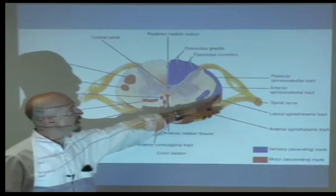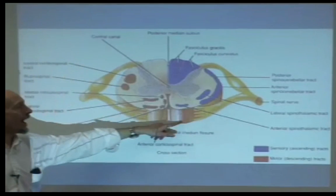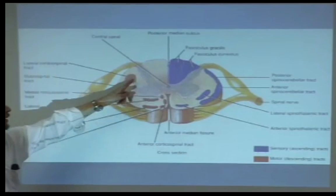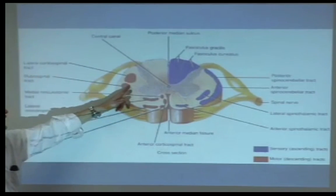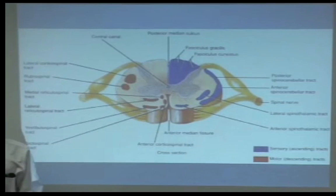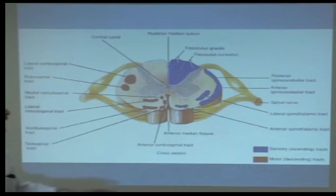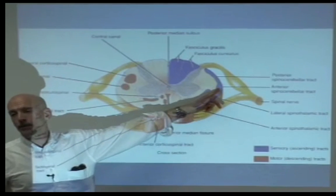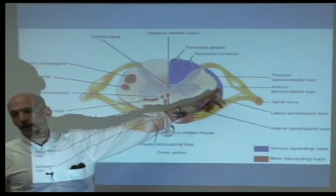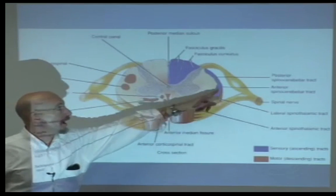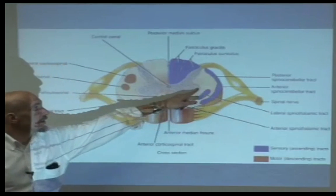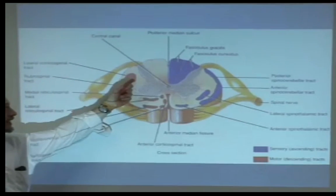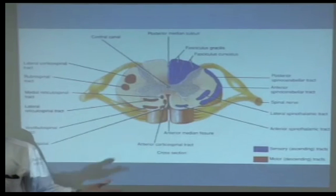So: spinal cerebellar tracts are on the back, outside. Dorsal column on the back. Motor pathways on the inside. If you have hyporeflexia and a loss of balance, I can almost promise you there's something going on. If I'm compressing from the outside in, I have to go through spinocerebellar structures to get to the motor pathways.